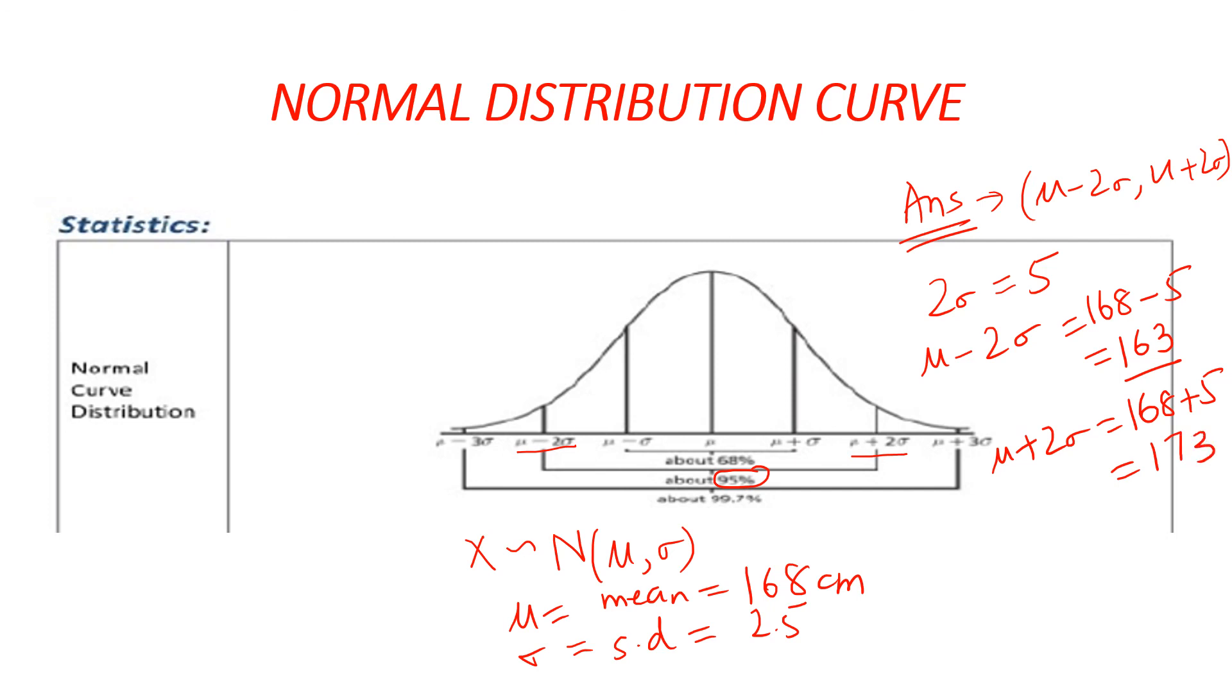So what is the range? The range, the answer is 163 to 173, which is part A of the question. That completes the question for today on normal distribution curve. And if you found the question useful, do consider subscribing to the channel. It motivates me to make more videos for you. And thank you for watching. Bye-bye.